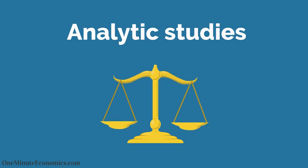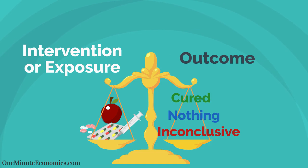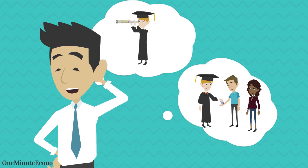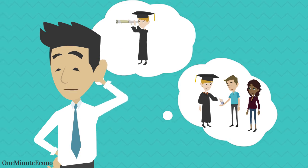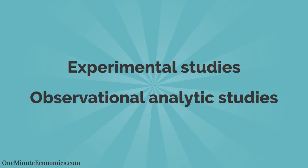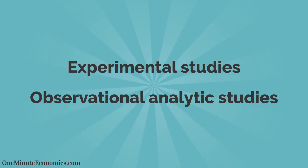2. Analytic studies, which try to identify and quantify a relationship between factors like a certain intervention or exposure on an outcome. When it comes to analytic studies, we have to ask ourselves if the researcher was passively or actively involved, and identify two main subcategories.